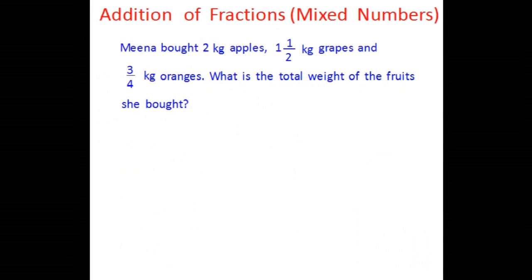Now let's take a word problem and solve it by adding mixed numbers. The problem says: Mina bought 2 kilos of apples, 1 and a half kilos of grapes, and 3 over 4 kilos of oranges. What is the total weight of fruits she bought? We need to add these 3 numbers: the whole number 2, the mixed number 1 and a half, and the fraction 3 over 4.